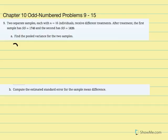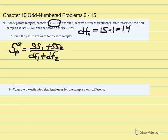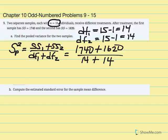We're going to calculate pooled variance. Our pooled variance equation is equal to SS1 plus SS2 over degrees of freedom 1 plus degrees of freedom 2. Since each sample is 15, degrees of freedom 1 equals 15 minus 1, giving us 14. Degrees of freedom 2 is also 15 minus 1, giving us 14. So SS1 is 1740 plus SS2 is 1620, over degrees of freedom 1 plus degrees of freedom 2, which is 14 plus 14.